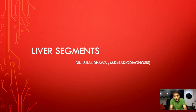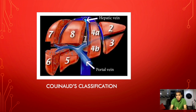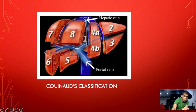Welcome to this session on liver segments. I will tell you how we interpret liver segments on ultrasound in relationship to the Couinaud classification. Looking at this picture, this is how the liver is placed in the body. The upper part is superior, down is inferior, the front is anterior, and as we move back, we see the posterior part.